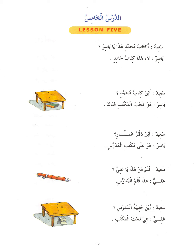The mudhaafun ilayh can sometimes be a nakira and it can sometimes be a ma'rifah. For example, Kitabu talibin — the book of a student — here it's a nakira. Kitabu talibi — here it's a ma'rifah. In the case of Qalamu man, man is a mudhaafun ilayh, but even though it's a mudhaafun ilayh, there is no kasra on its ending because it's mabni — indeclinable — built on sukun.